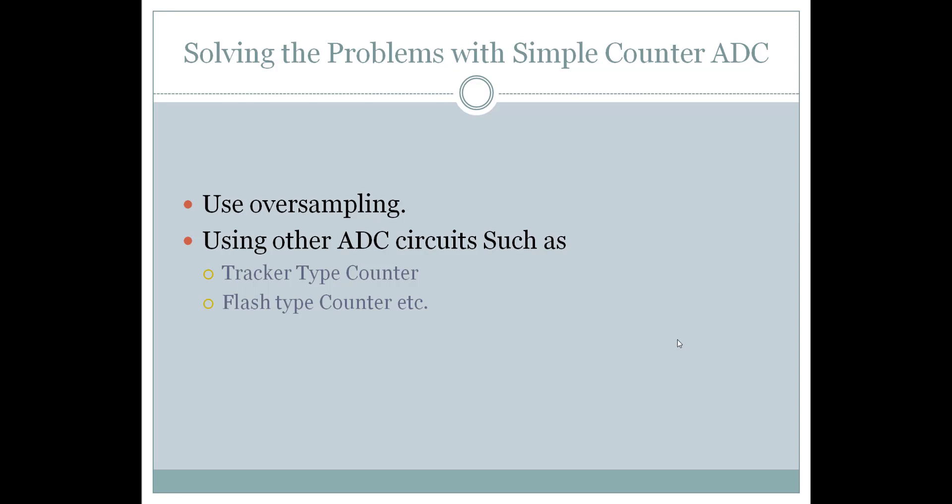The problems which were encountered in the simple counter ADC were less sampling and more time to take samples. These problems can be overcome by using oversampling as shown before, or by using another analog to digital converter circuits such as tracker type and flash type. We will further see these analog to digital converters in the next videos.